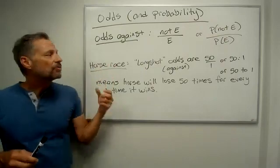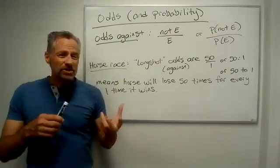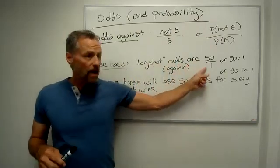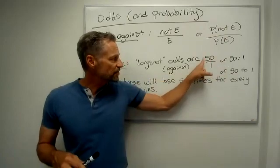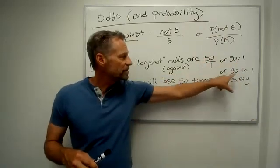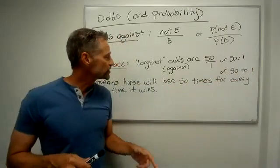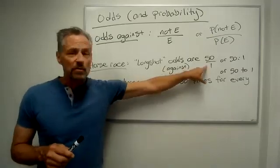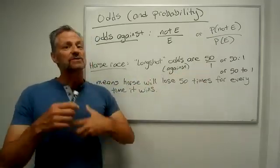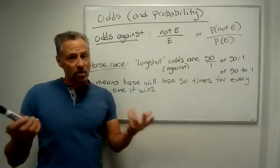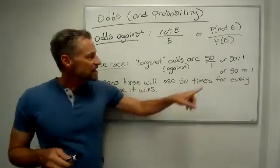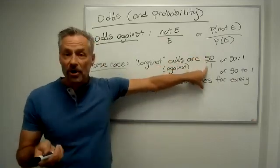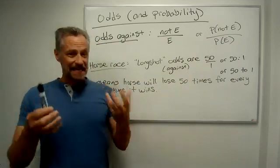So say we're in a horse race. The long shot is the horse with the worst chance of winning, the lowest probability. If the long shot odds are 50 to 1, we can write it as 50 over 1, 50 colon 1, or just 50 to 1 in words. These are odds against. That means the horse will lose 50 times for every one time it wins. Also, if you bet $1 and win, you get $50 plus your $1 back. That's what odds against are.